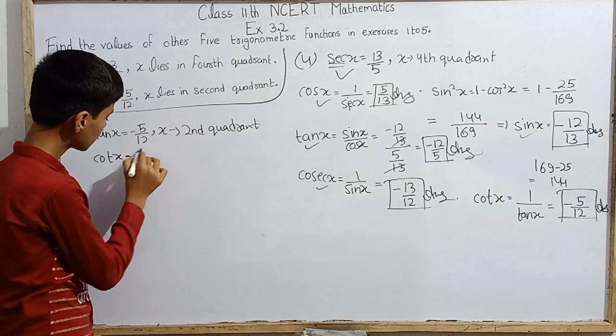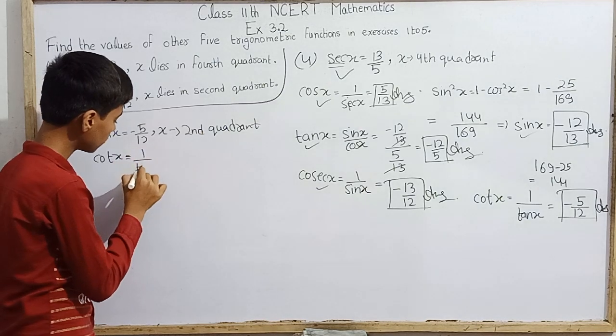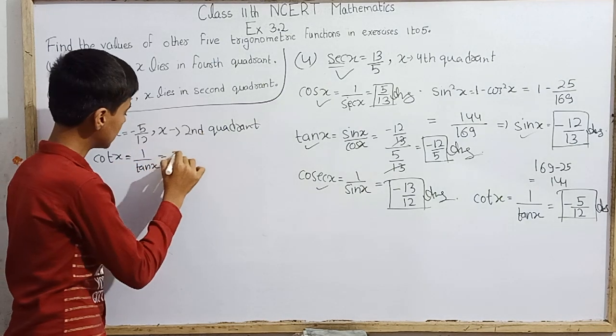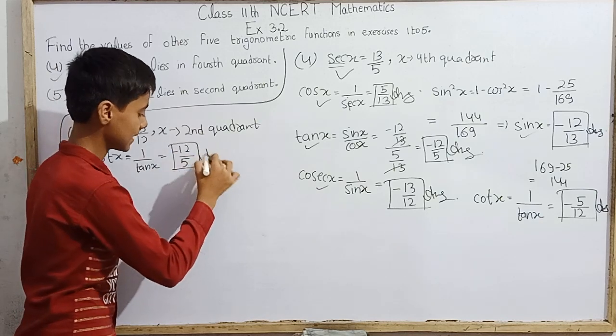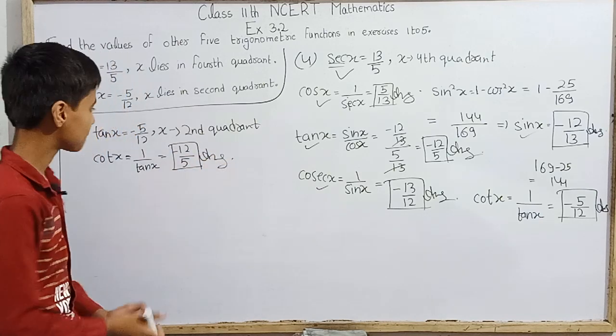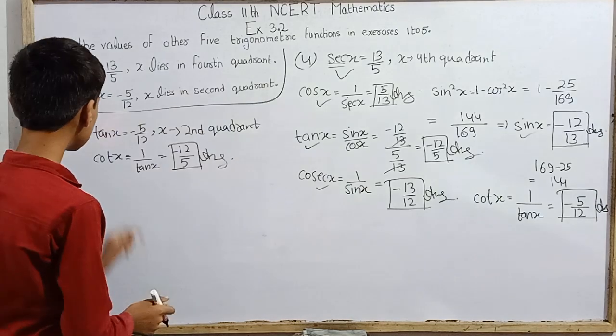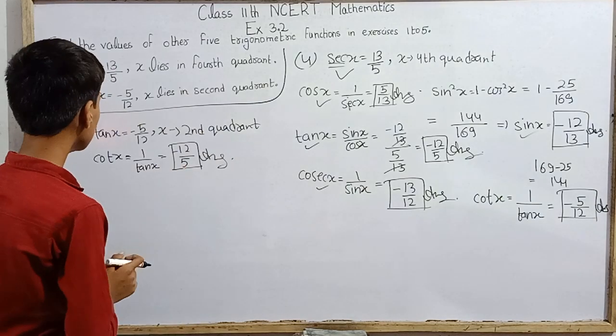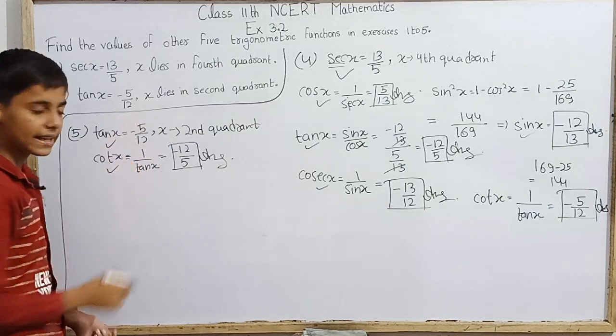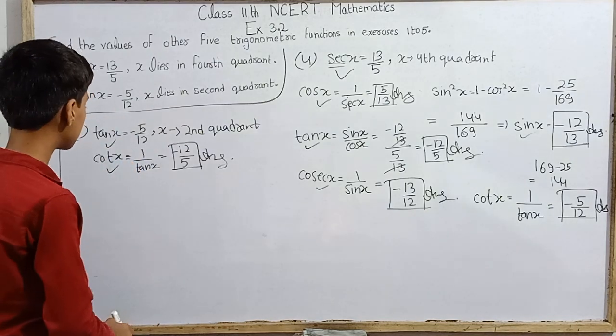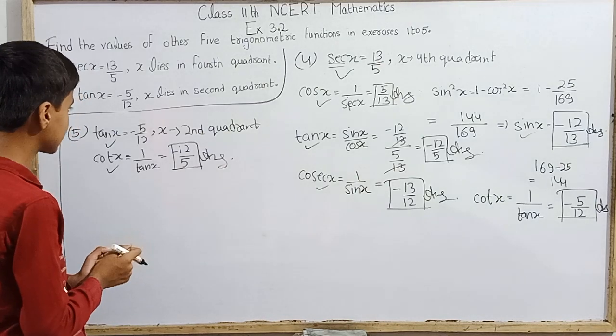First of all, cot x, which is 1 over tan x, will be minus 12 over 5. So we get cot x easily. Now to find sine x and the other functions, we will use the identity sec squared x equals 1 plus tan squared x.